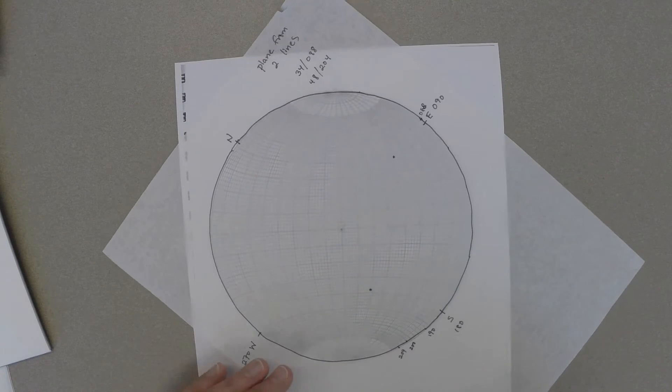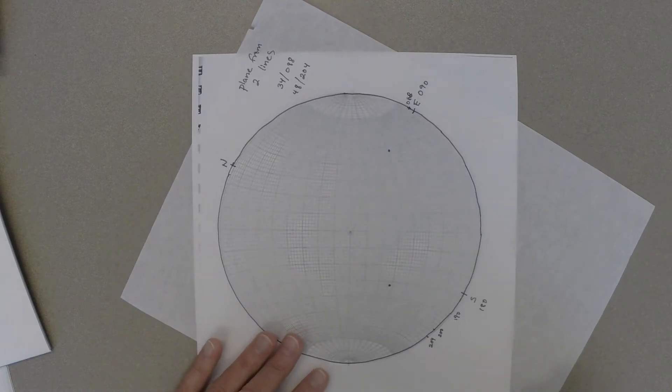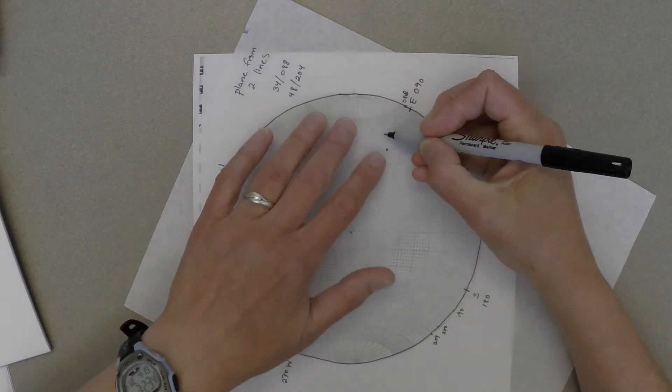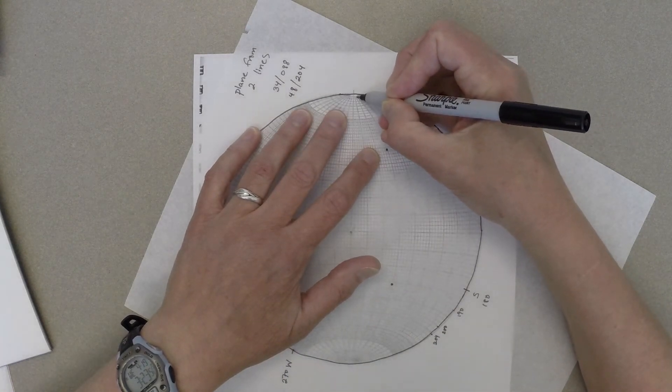Now to find the best-fit great circle, to find the plane that contains those two lines, we want to line those two dots up along the same great circle.